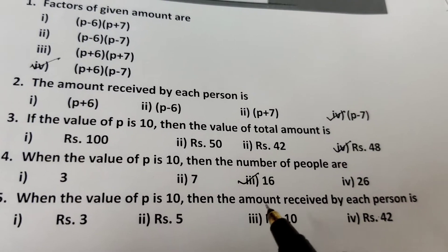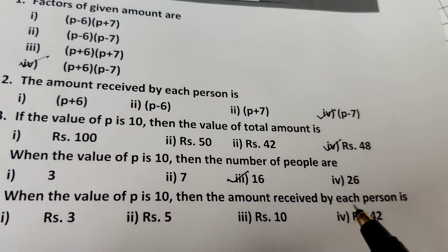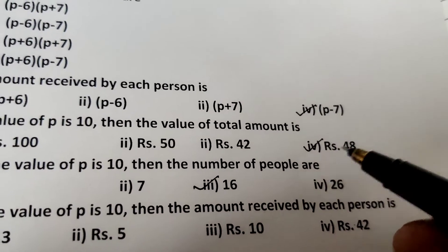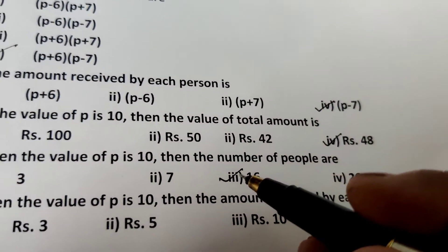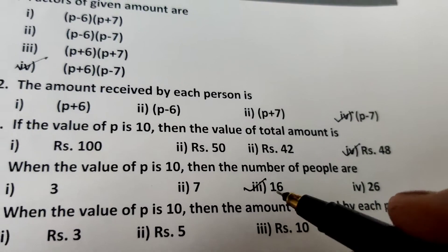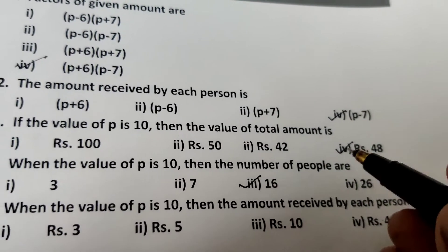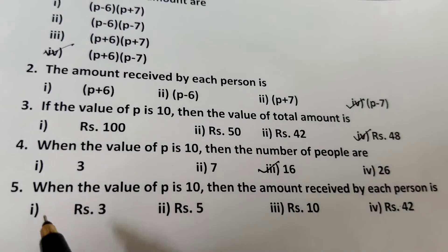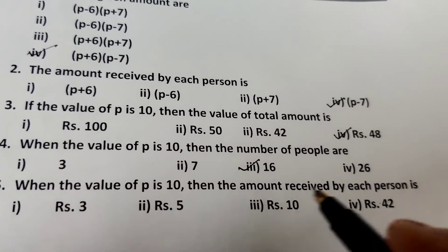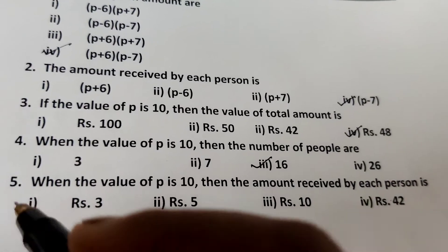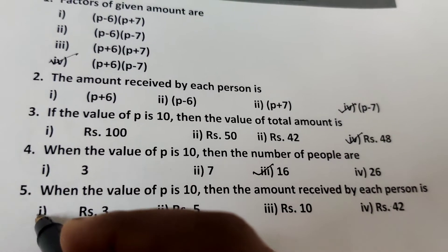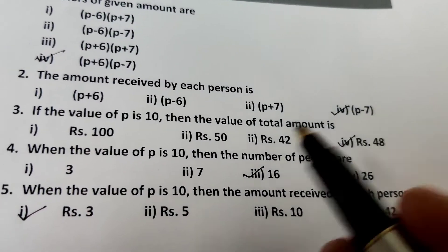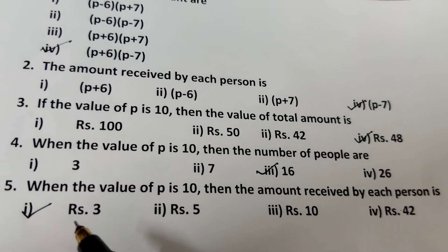Question 5: When p equals 10, what is the amount received by each person? The total amount is 48 and the total number of people is 16. Dividing 48 by 16 gives rupees 3. Alternatively, using p minus 7, we get 10 minus 7 equals 3. Each person receives rupees 3.